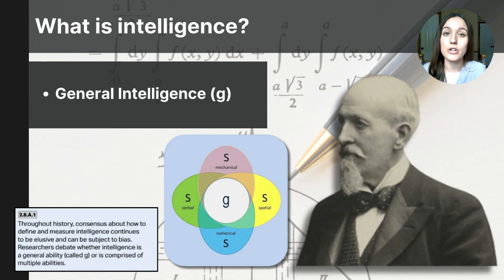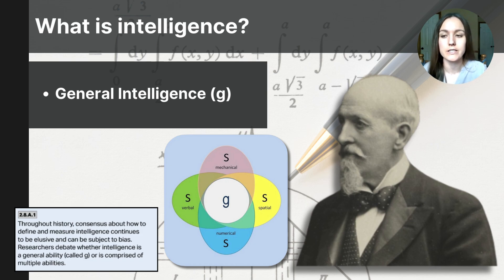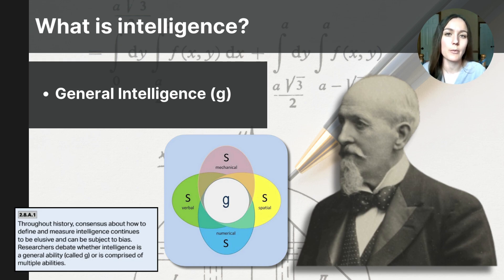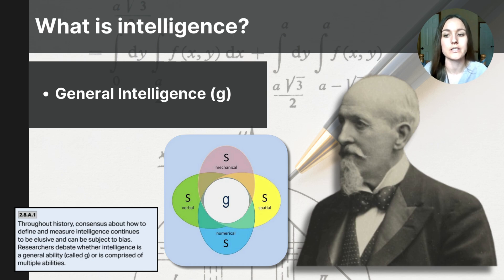British psychologist Charles Spearman introduced the concept of general intelligence, or G. He believed that a single innate intelligence underlies all mental abilities, and that general intelligence influences our capacity to learn and solve problems in other areas. Using factor analysis, Spearman found that people who score well in one area tended to score well in other areas, suggesting a common general intelligence. He identified specific abilities like mechanical, verbal, spatial, and numerical, but added those together through a statistical measure to compute a central, general, or overall intelligence score.